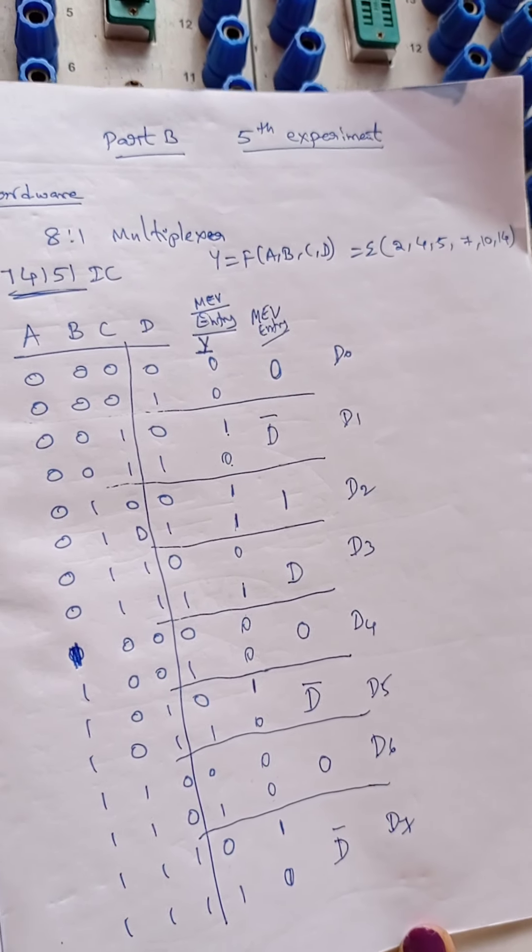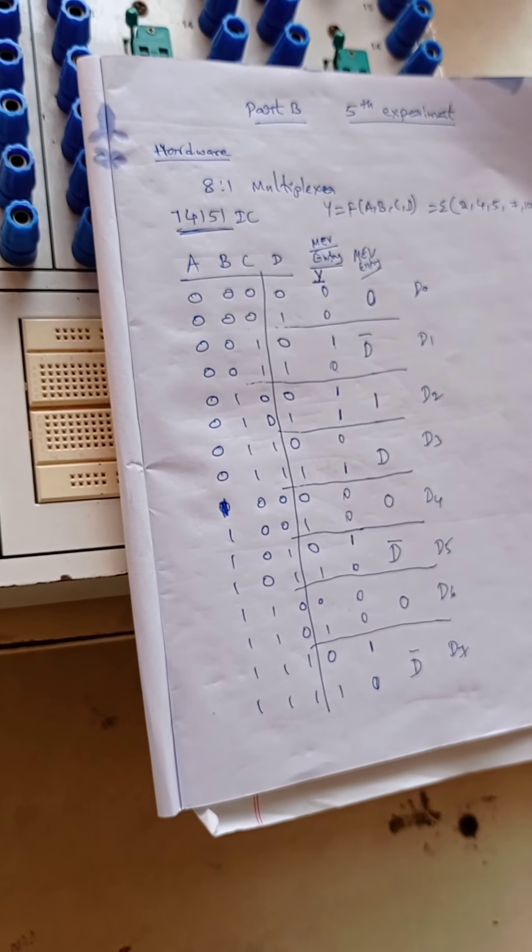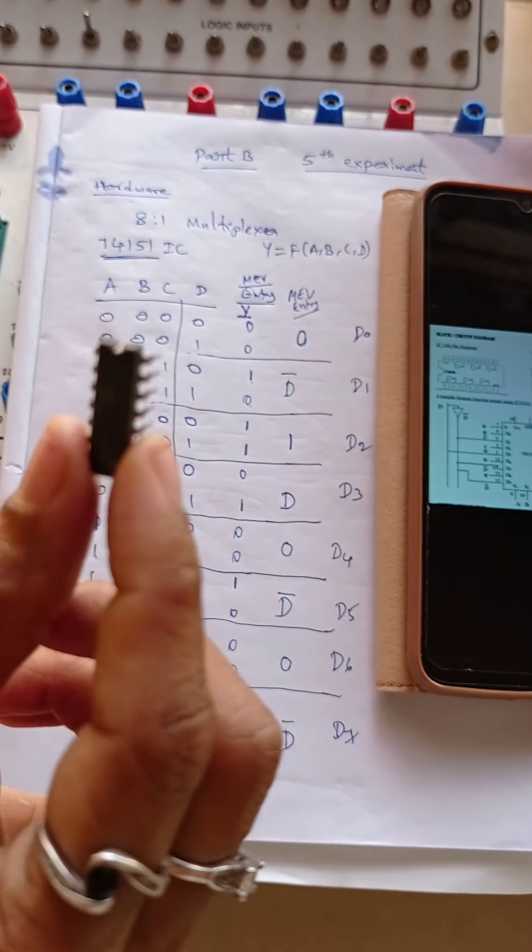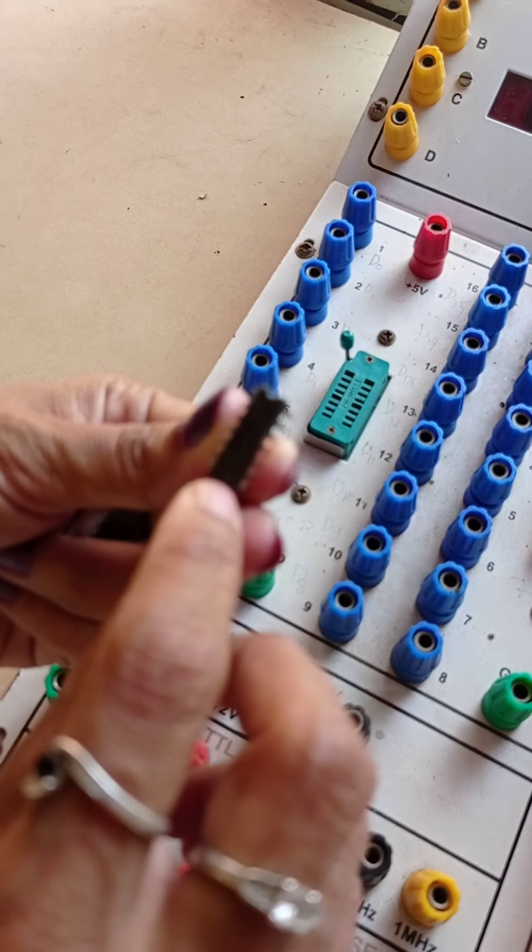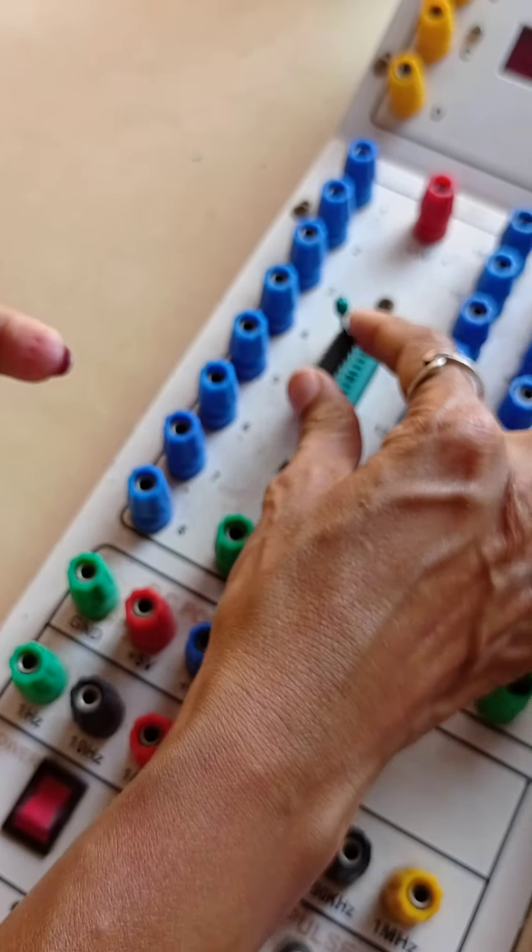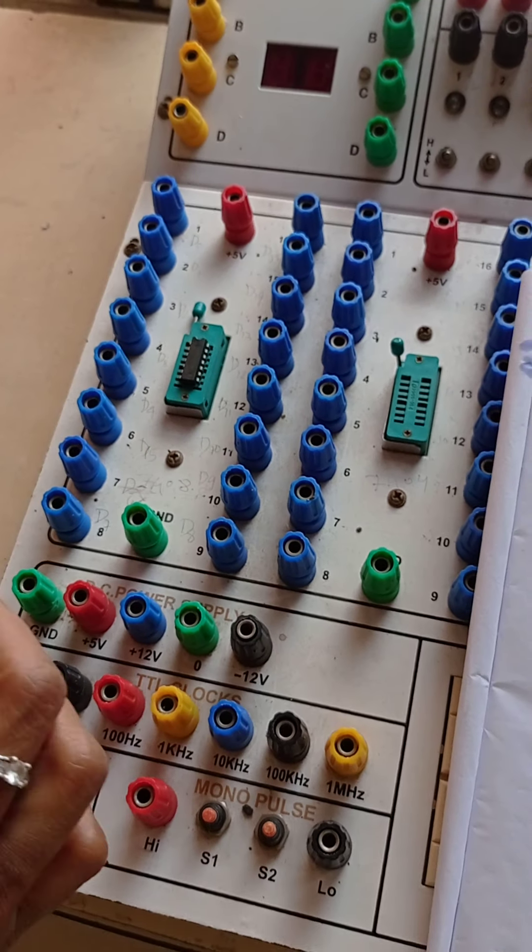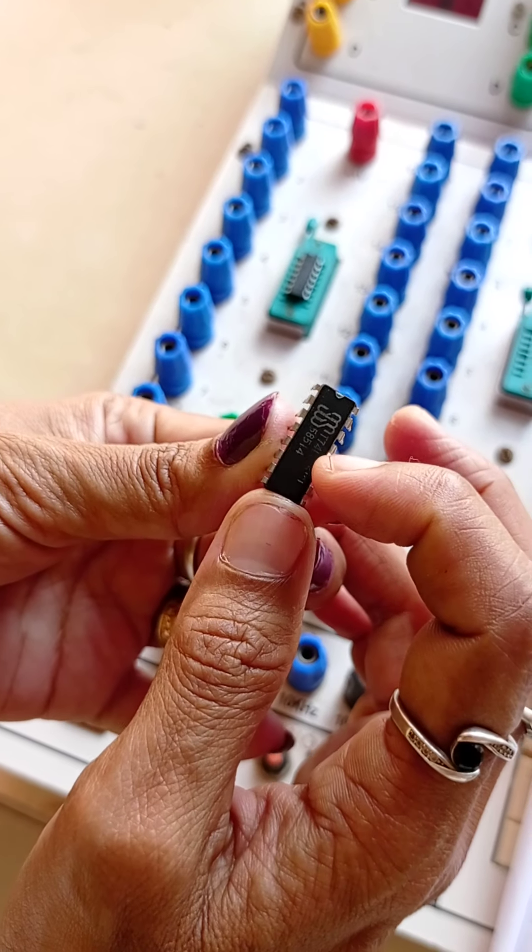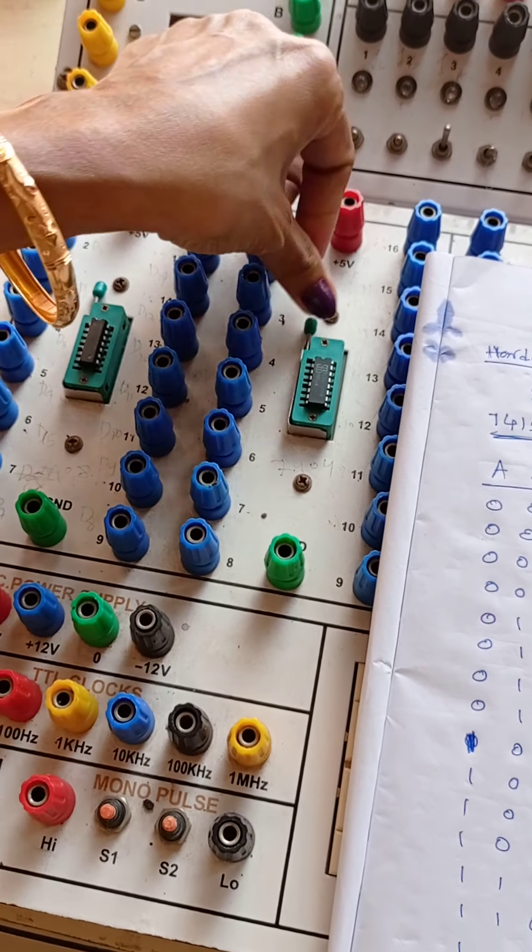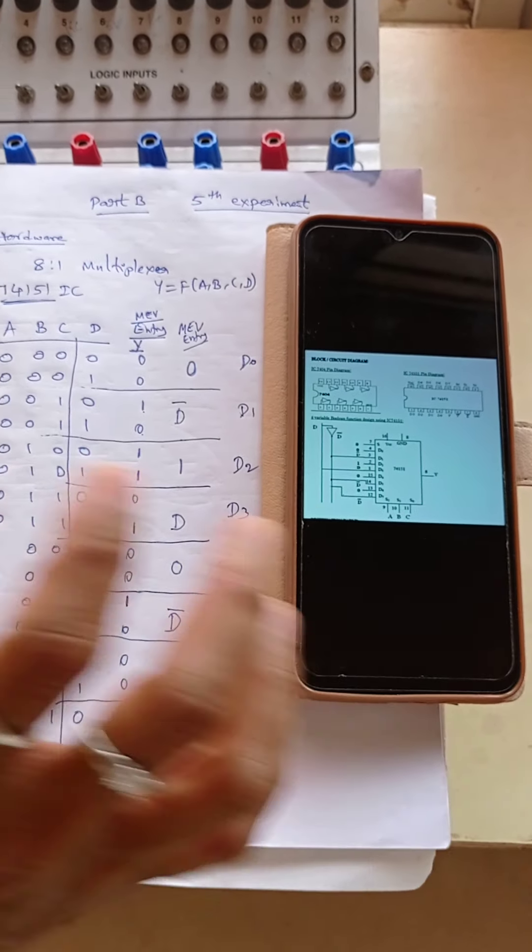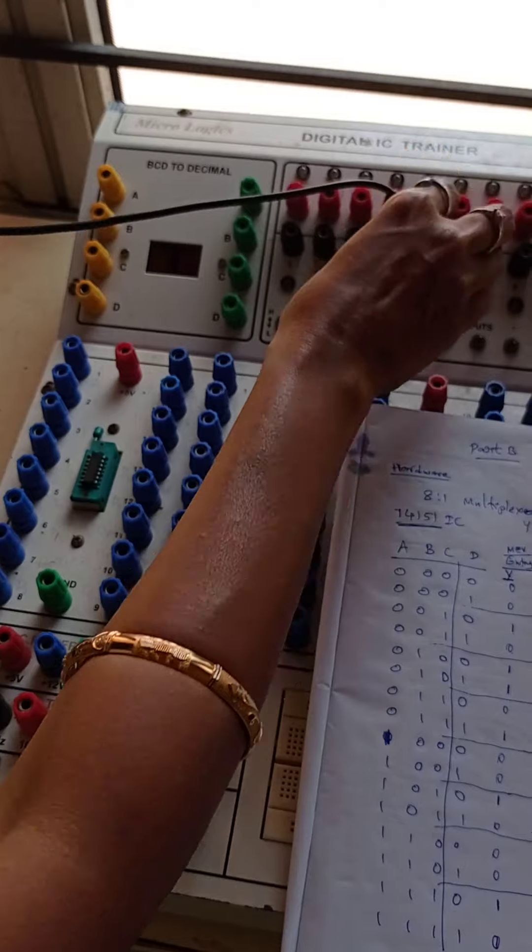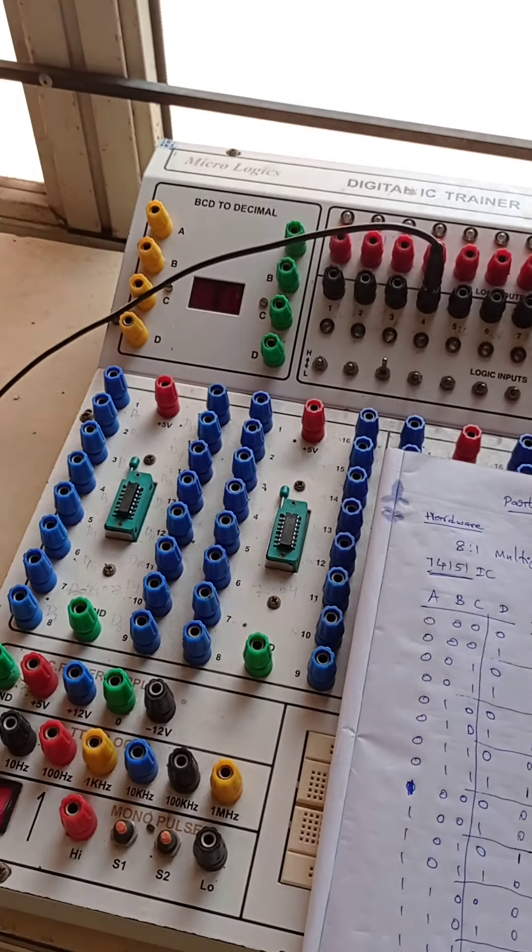Now we will design the circuit using this design. Now designing the 8 is to 1 multiplexer, we need one NOT gate IC that is 7404. See the notch here and place and lock this. Next multiplexer IC, this is 74151 notch upside, place here, lock this. Now according to the circuit design, first we need to give the D input. I am taking here D.